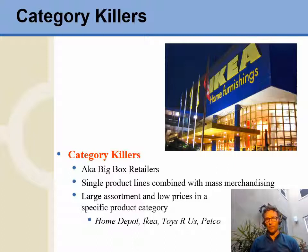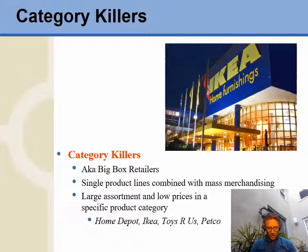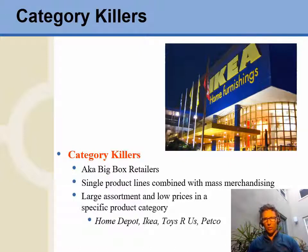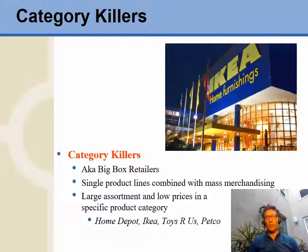Nowadays, if you're a True Value hardware store — a franchise operation that's been around for quite a while — it's a company that's struggling because they're getting moved in on by category killers like Home Depot and Lowe's. These are giant stores that come in with all things related to home improvement, and the small mom-and-pop stores get killed — hence 'killing the category' — when a large big box retailer comes into the neighborhood. So it's a single product line, like Ikea for all things home furnishings, combined with mass merchandising.